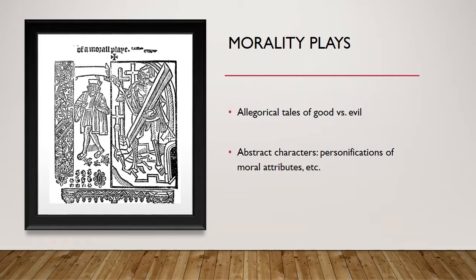One of the major types of drama of the medieval period are what we call morality plays. These were allegorical tales of good versus evil, very straightforward in terms of their morality, and they contained abstract characters that are not really people but personifications of moral attributes. We see here an image from the cover page of Everyman, a morality play. In the graphic, we have a human on the left; on the right, we have a figure of death, a demonic figure — very obvious are the stakes at play: life and death, good and evil, humans fighting against death and suffering and our evil tendencies.